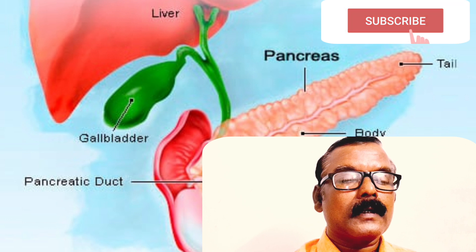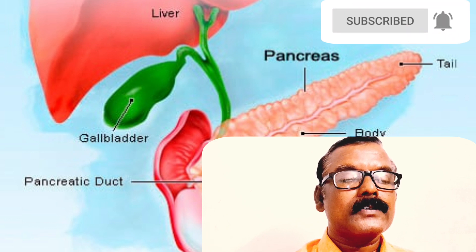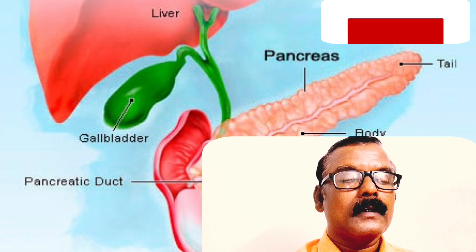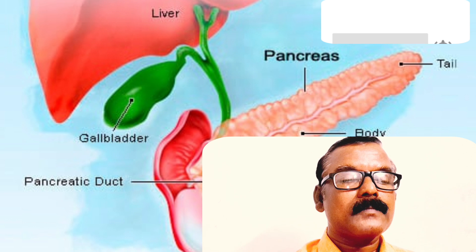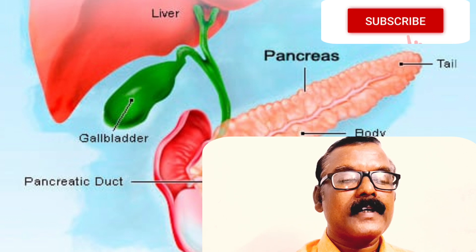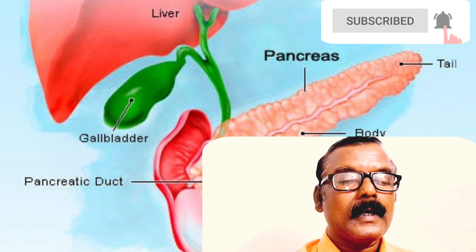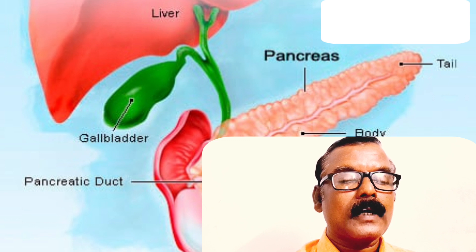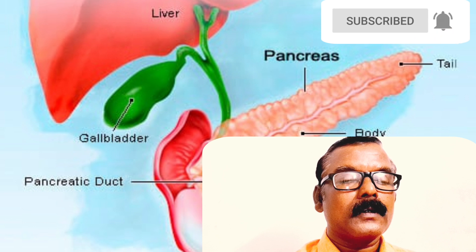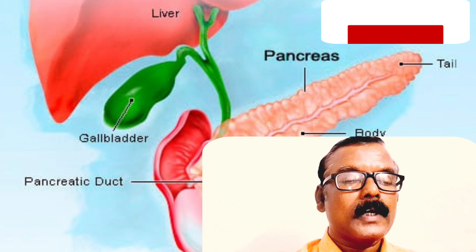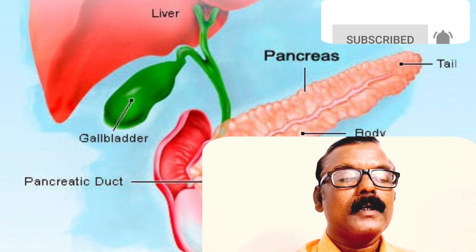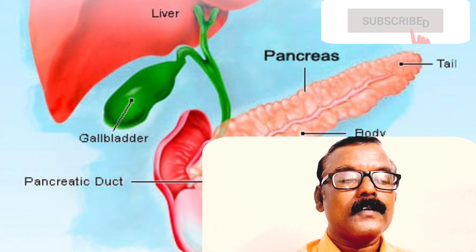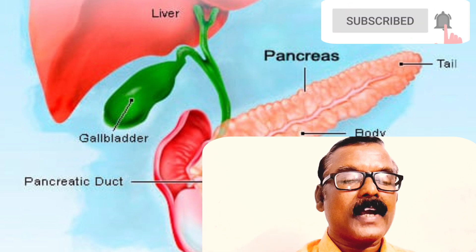The pancreas is an organ six to eight inches long. It extends across the abdomen. The largest part lies on the right side of the abdomen, where the stomach connects to the first part of the small intestine, or duodenum. At this point, the partially digested food passes from the stomach into the small intestine and mixes with secretions from the pancreas.